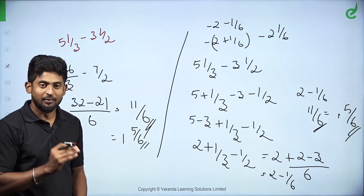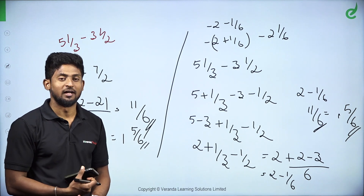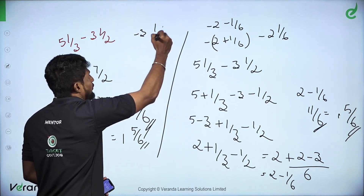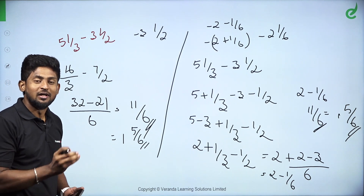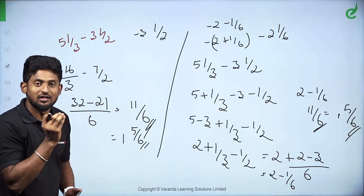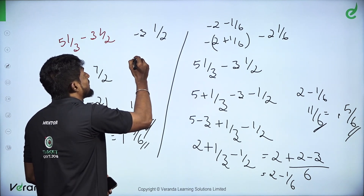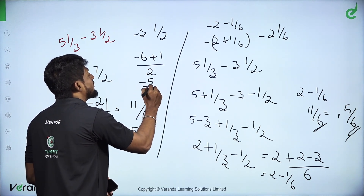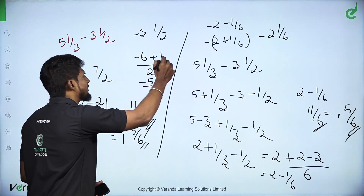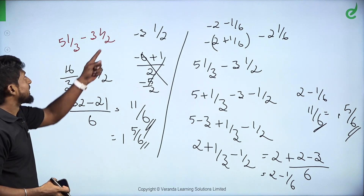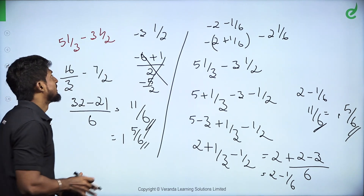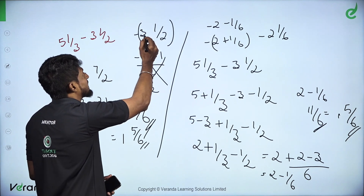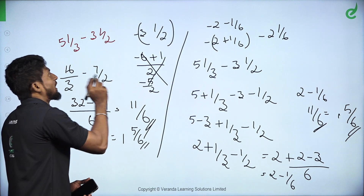We can follow two methods. But in this method, how many mistakes have been made? The other method: minus 3 and 1 by 2. Here, minus 3 and 1 by 2: 3 times 2 is 6, so minus 6 plus 1 divided by 2, which is minus 7 by 2. Minus 3 and 1 by 2 becomes minus 7 by 2.